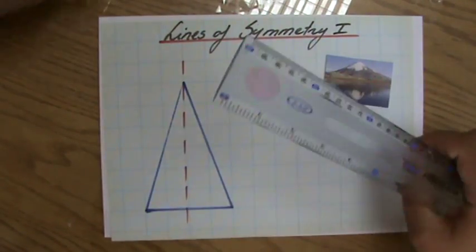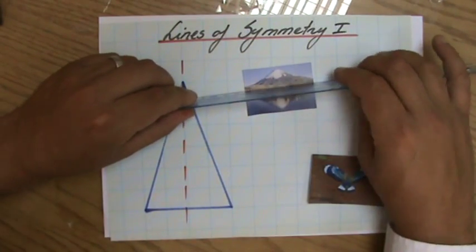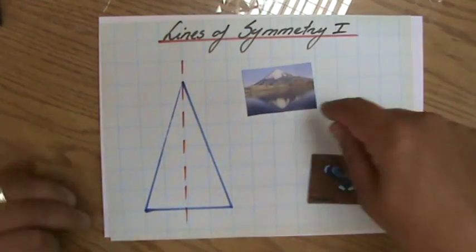The mountain here, same thing, a line of symmetry where the actual mountain and its reflection in the water, you could have a line of symmetry there.